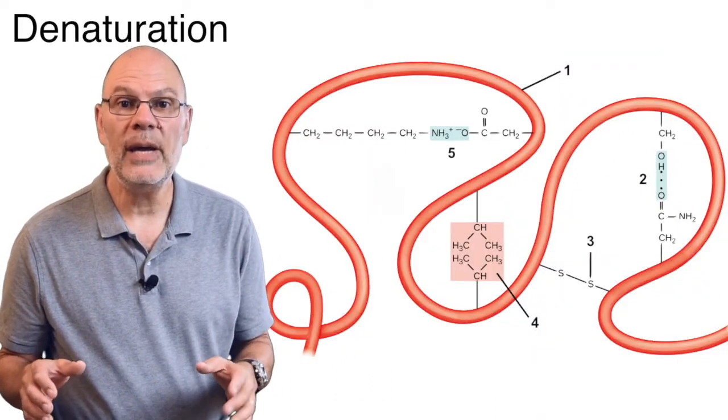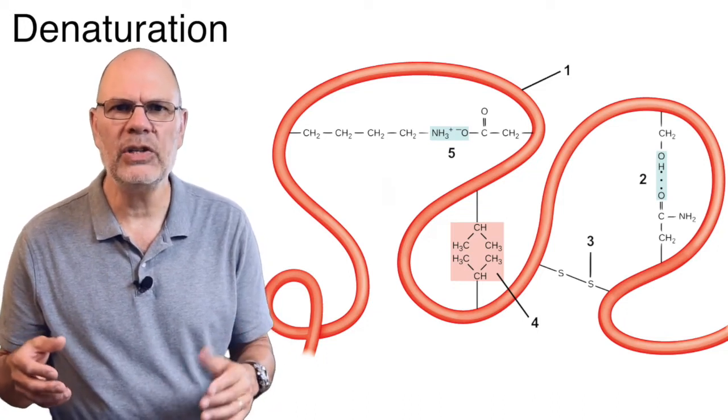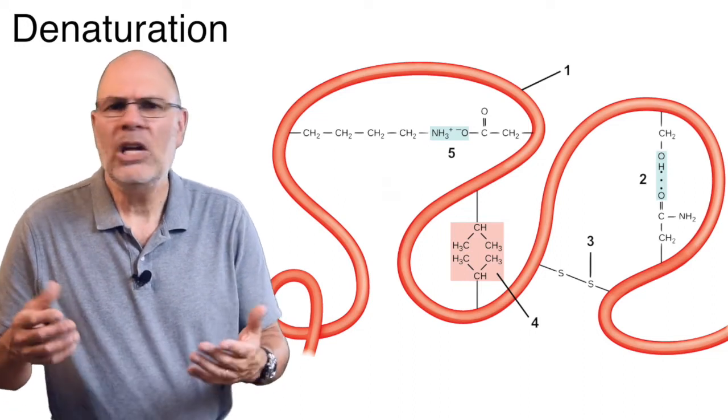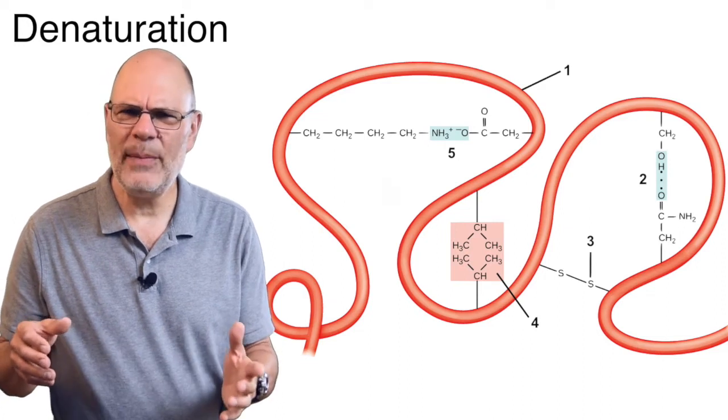because much of protein shape is determined by interactions like hydrogen bonds and ionic bonds, the shape of a protein can easily be disrupted. Change the pH a protein is optimized for, and its shape deforms.